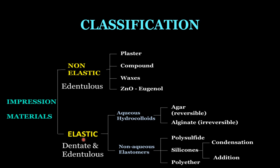The second category is elastic materials, used for dentate and edentulous patients with undercuts. Non-elastic materials include impression plaster, impression compound, impression waxes, and zinc oxide eugenol impression paste. Elastic materials are further classified as aqueous hydrocolloids and non-aqueous elastomers. Aqueous hydrocolloids include agar (reversible) and alginate (irreversible). Non-aqueous elastomers include polysulfides, silicones (condensation and addition), and polyether. A detailed video for these is already in the playlist.